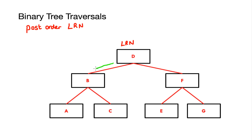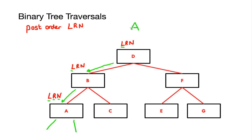I write down my rules — left, right, node — and move down the left subtree. I rewrite my rule at node B — left, right, node — then traverse the left subtree again down to A. I look left at A: there's no left subtree so I tick that rule off. I look at the right subtree at A — none there either — and therefore I go back up to the node itself at A and write that down after completing the left and right traversals.